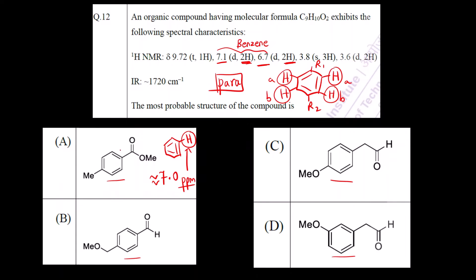You can see here there is substitution at the one and four position — that is para. Options A, B, and C all show one-four substitution, so A, B, and C can be the product. However, option D shows ortho and meta substitution, so D is straight away eliminated. From just one data point we have eliminated one option.